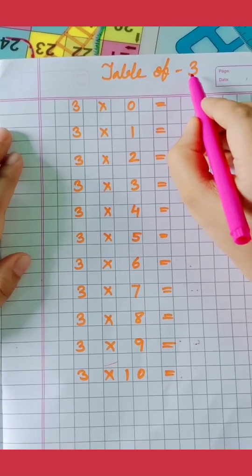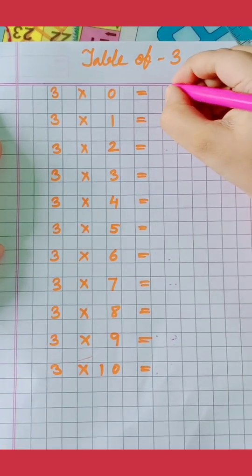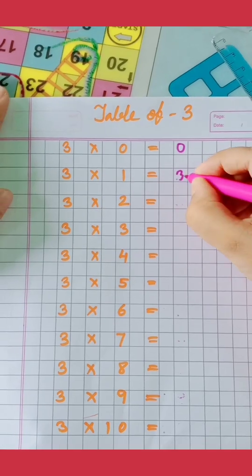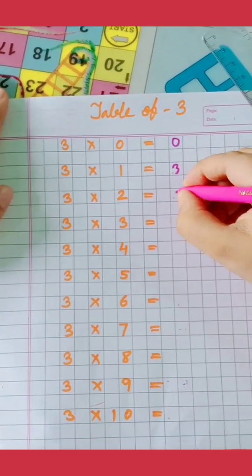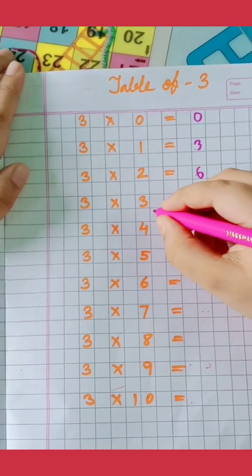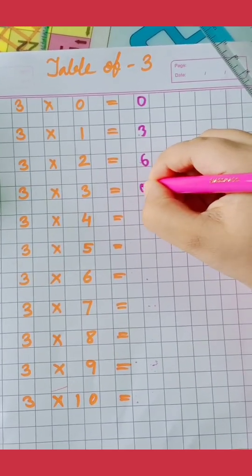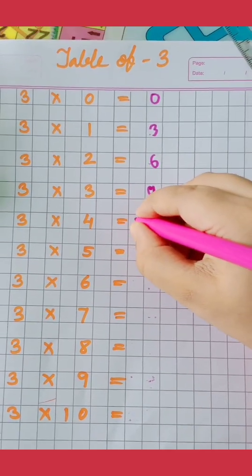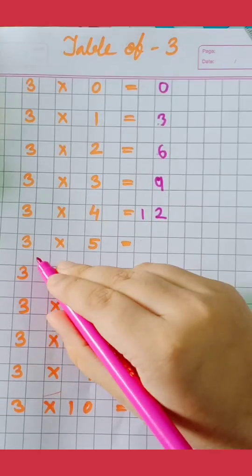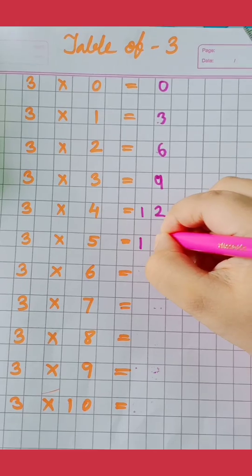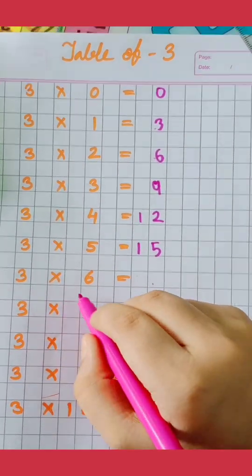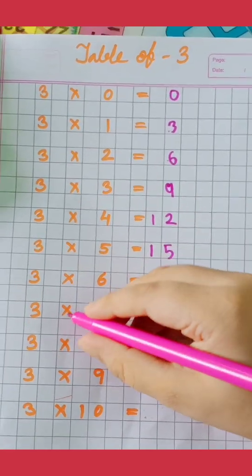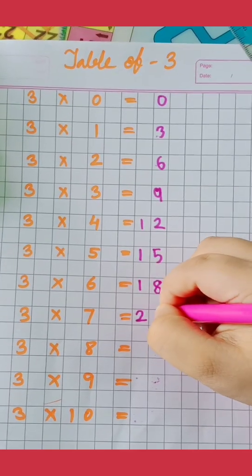Table of 3. 3 0's are 0, 3 1's are 3, 3 2's are 6, 3 3's are 9, 3 4's are 12, 3 5's are 15, 3 6's are 18, 3 7's are 21.